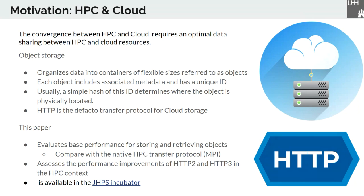Object storage organizes data into containers of flexible devices referred to as objects, which include associated metadata and have a unique ID. Usually a simple hash of this ID determines where the object is physically located. Since HTTP is the de facto transfer protocol for cloud storage, we are going to evaluate its viability and base performance for storing and retrieving objects in comparison with a native HPC transfer protocol, MPI, which is believed to offer superior performance and lower resource consumption.